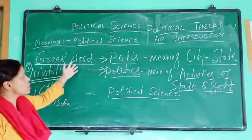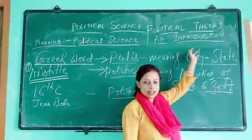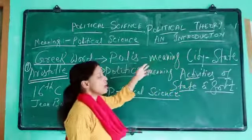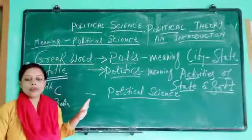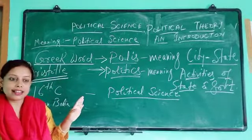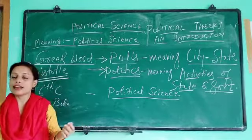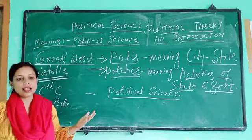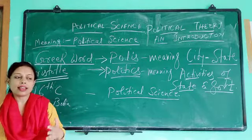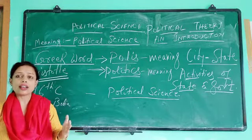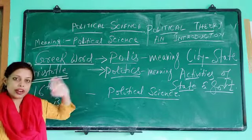My first chapter is Political Theory: An Introduction. This is the first chapter that we will deal with. In this chapter we will go through what is political science, the meaning of political science, the definition of political science, areas of political science, and what exactly political science revolves around.